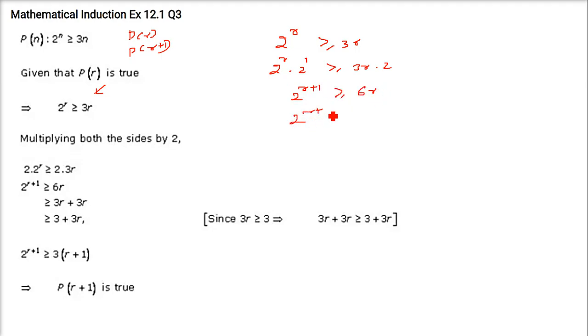Here we get 2^(r+1) and here we get 6r. Now 6r can be written as 3r plus 3r. But if you see, 3r will always be greater than or equal to 3. Put r=1 here, 3 is greater than or equal to 3. Put 2 here, 3 into 2, 6 is always greater than or equal to 3. So here we can write this just as 3. This can be written as 2^(r+1) greater than or equal to 3r plus 3.